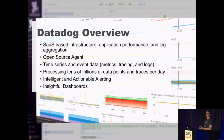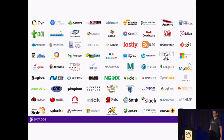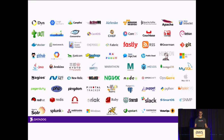Datadog is a SaaS-based monitoring tool providing log aggregation, traces, and metrics to our customers. We're collecting tens of trillions of metrics, traces, and log events from our customers around the world. You may know us from our extensive integrations with more than 250 technologies covered out of the box. We're proud to be launch partners with two of Amazon's recent exciting new features, EKS and Fargate.